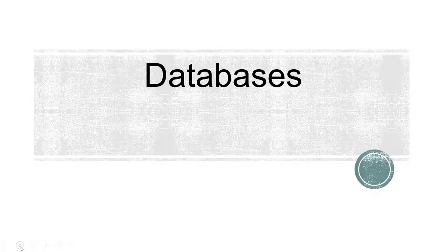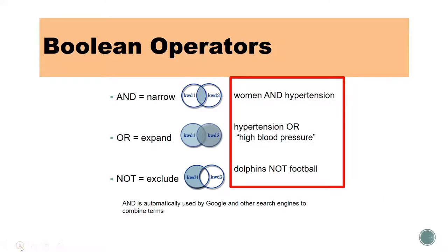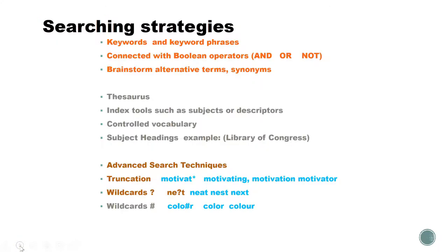Next let's talk about databases. When searching our databases it's a good idea to use boolean operators — these are words that connect your keywords or search terms. The operator AND will narrow your search, OR will expand it, and NOT excludes results. For searching strategies, use keywords and keyword phrases pulled from your topic or research question, connect your keywords with boolean operators, and brainstorm alternative terms and synonyms. You can use a thesaurus or an index tool to help find synonyms.